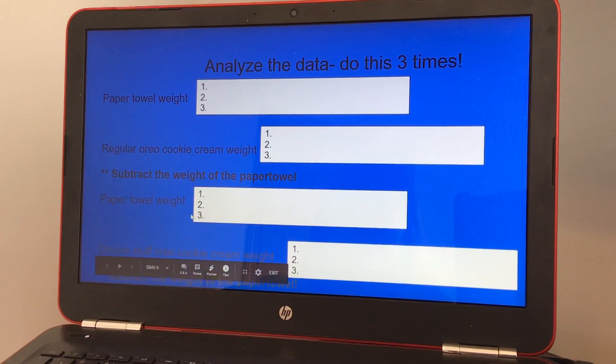And then you're going to do the same for the double stuffed. You're going to take the paper towel weight down, you're going to scrape the cream out of the double stuffed, and you're going to weigh that. And you just put that number here and subtract what the paper towel was to see what the actual weight of the cream was.